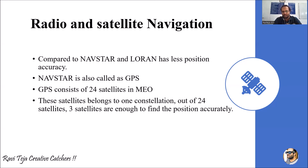When you use GPS to find a location, these 24 satellites in Medium Earth Orbit are applicable. These satellites belong to one constellation — a constellation being an orbital path to which several satellites belong. All 24 GPS satellites belong to this single constellation.